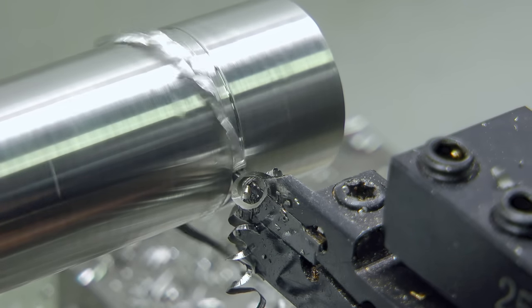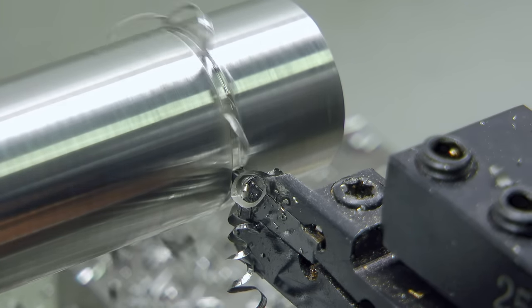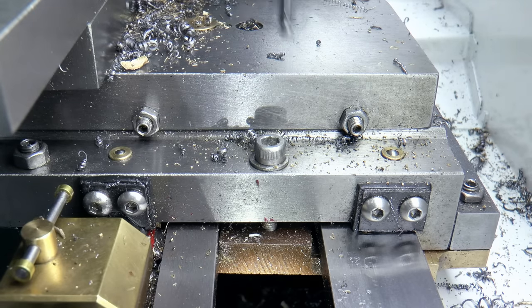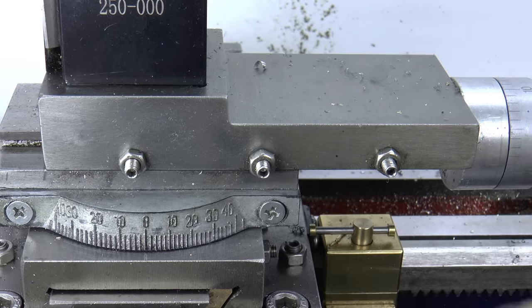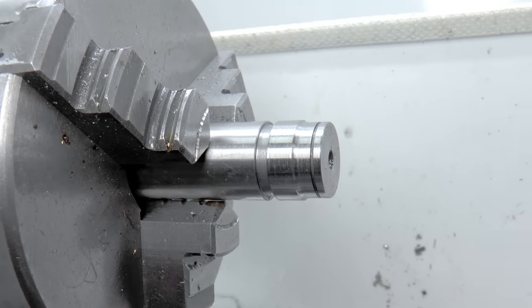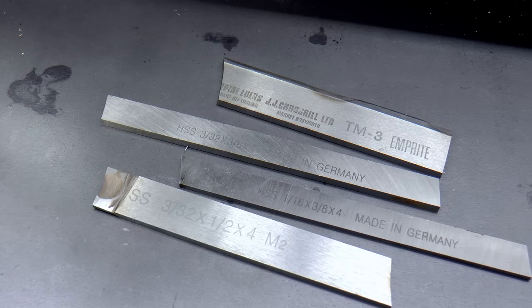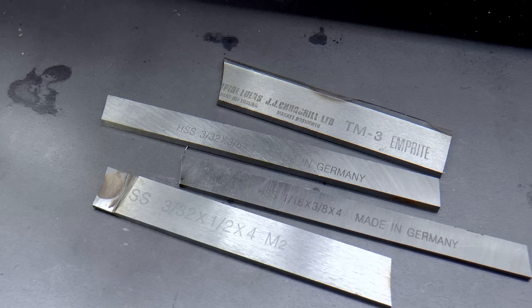One operation I know many mini lathe users have problems with is parting off. Locking the carriage, the compound slide and working as close to the chuck as possible all help, but success has always been more luck than judgement. I've tried a bunch of different high speed steel blades, and these are just the ones that frustration didn't send to the scrap bin. I've experimented with different widths, angles and reliefs, but I'd fail almost every time.